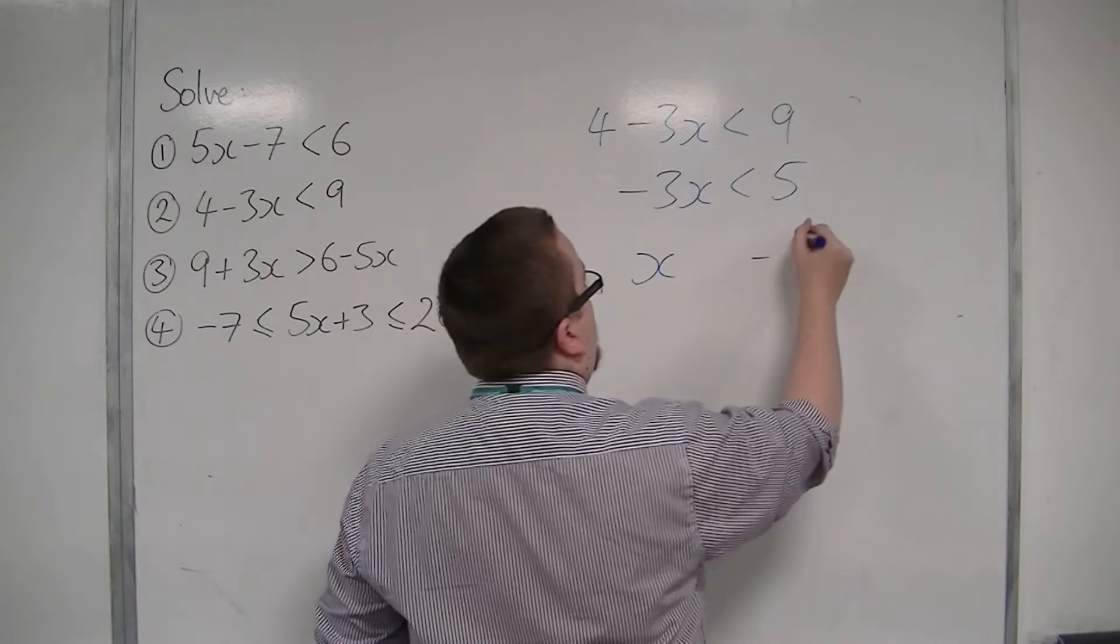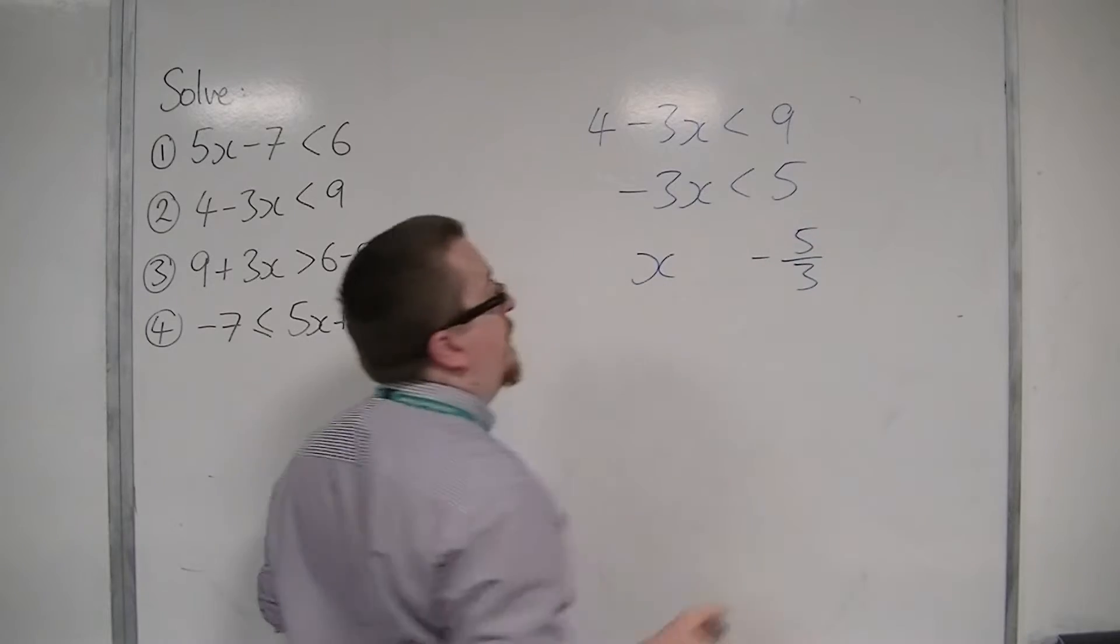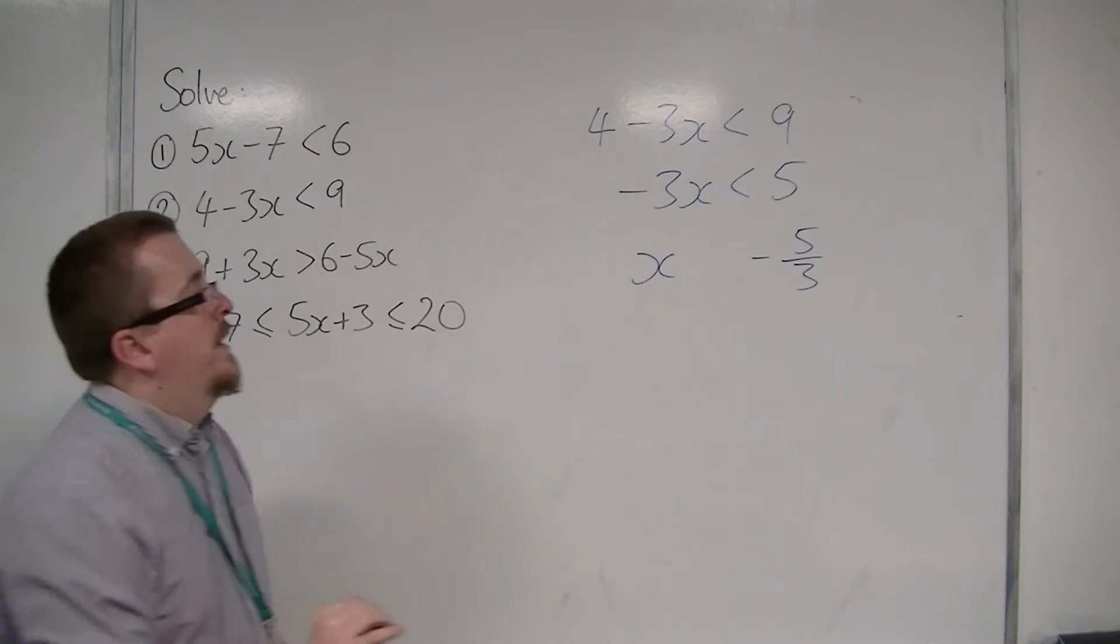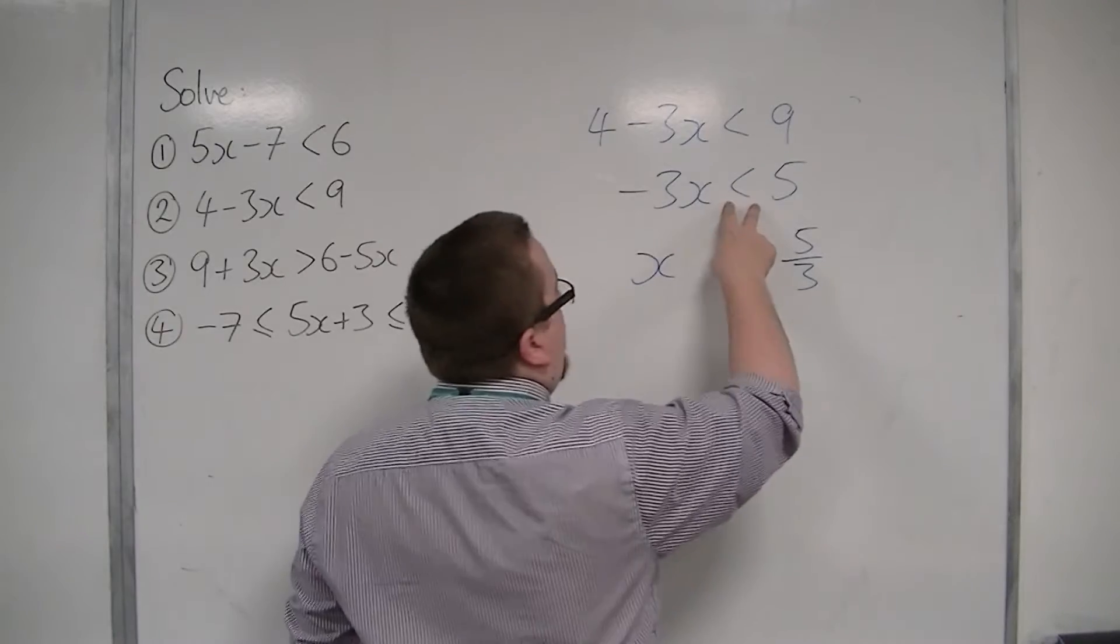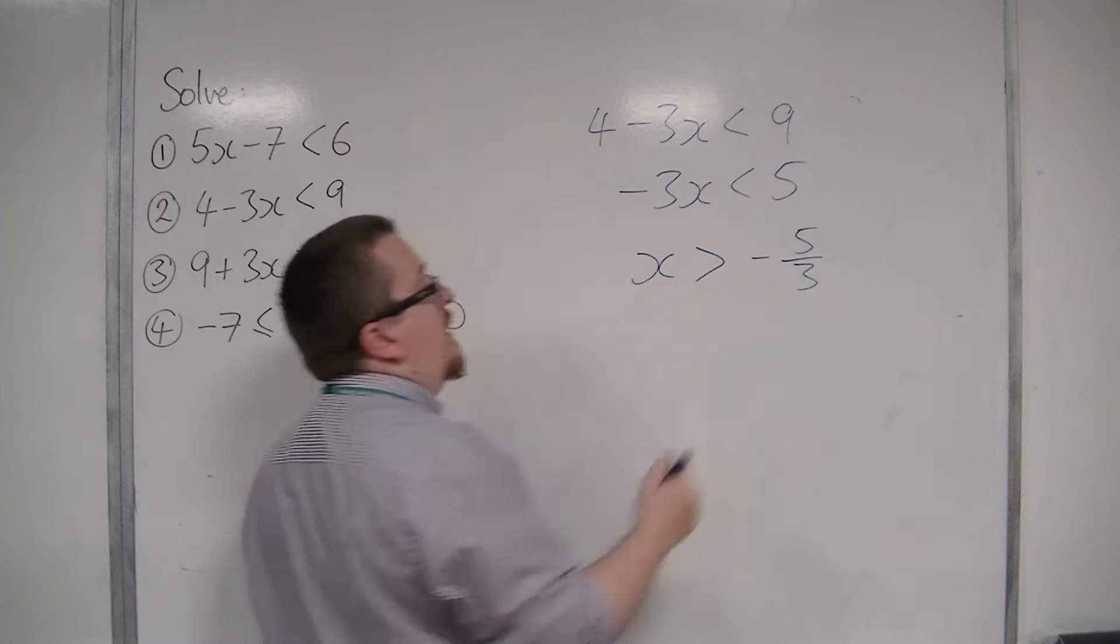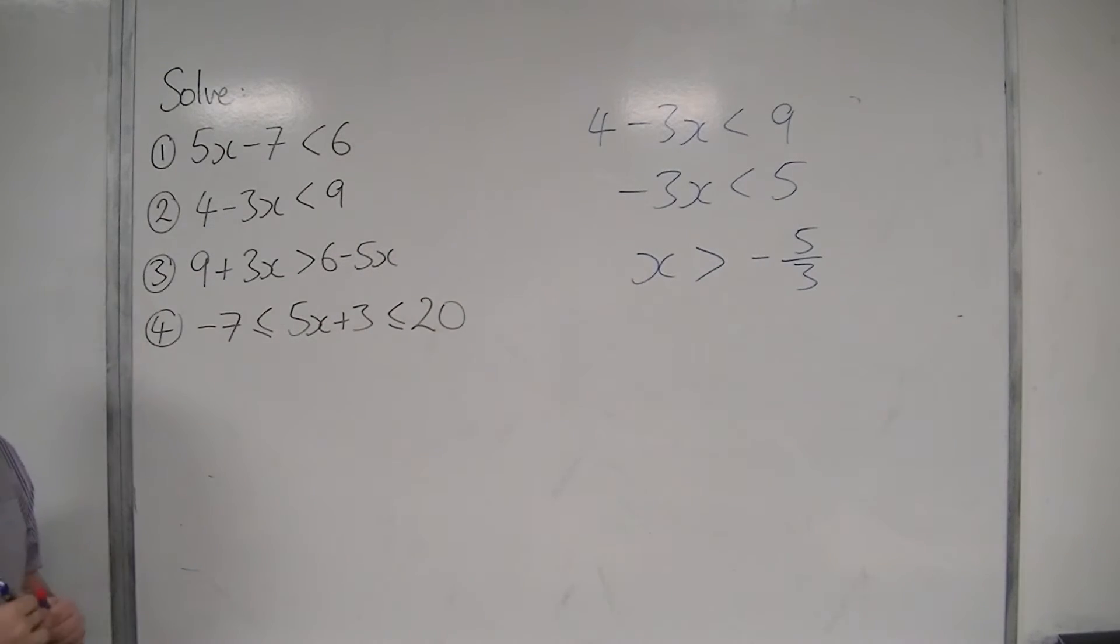Now I'm going to divide through by minus 3. And in doing so, I'm going to get minus 5 thirds on the right-hand side. But because I've divided through by a negative number, that means that the inequality sign changes round. And so now, x is greater than minus 5 thirds.